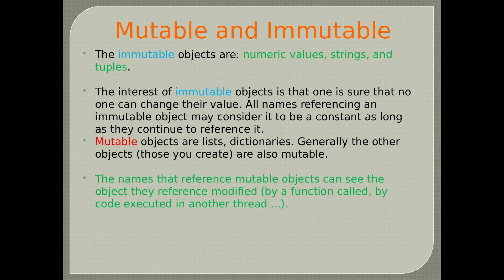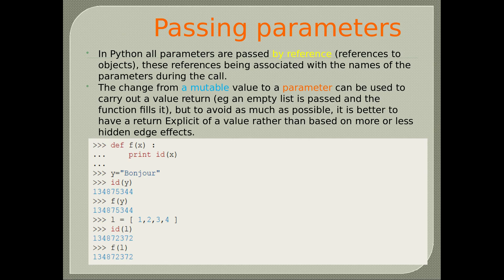Mutable objects are lists and dictionaries. The other objects you create are also mutable. Names referencing mutable objects can see the object they reference modified by a function called in another thread. Passing parameters: in Python, all parameters are passed by references to objects. The change from a mutable value to a parameter can be used to carry out a value return — for example, an empty list is passed and the function fills it. But to avoid hidden side effects, it is better to have an explicit return value.